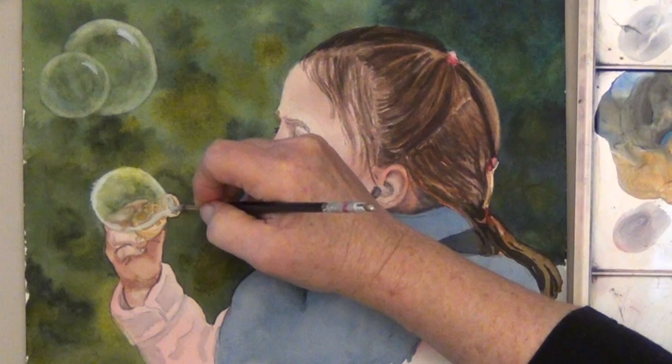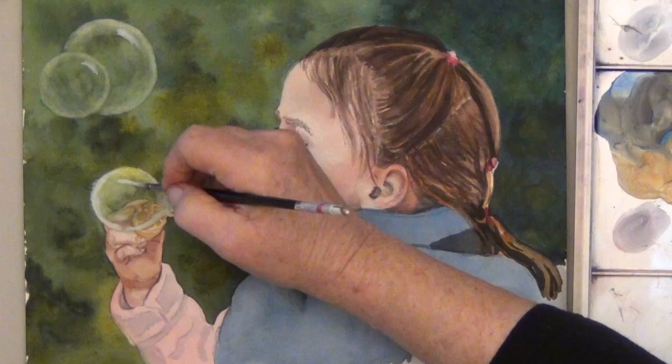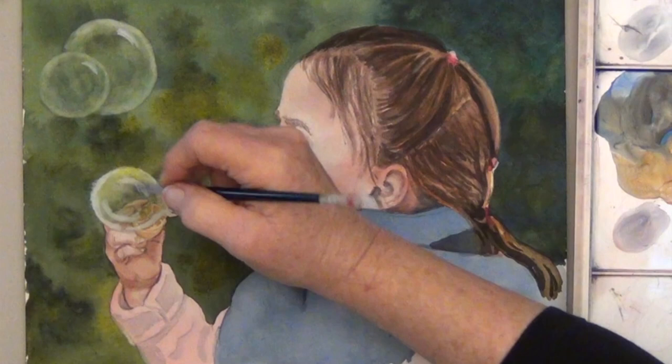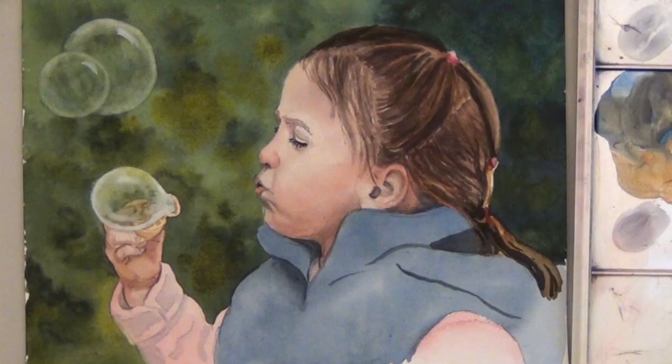And I want this to look like it's coming out of the bubble wand, so this time I'm going to connect it to the edges of the wand. I'll do a few more random bubbles of different shapes and sizes, then I'll come back and add any white highlights that have faded out.